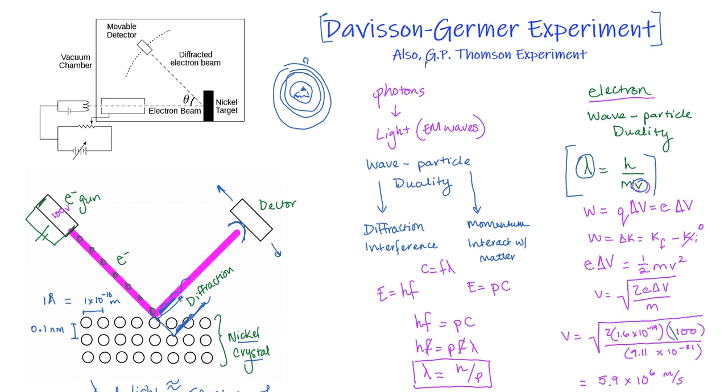One side note to remember is that G.P. Thomson did a similar experiment and got similar results independently of Davison and Germer and they were awarded the Nobel Prize for Physics.